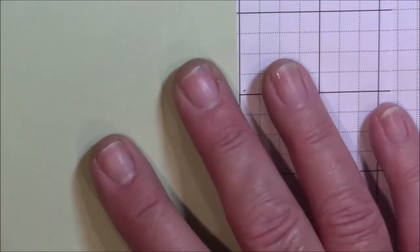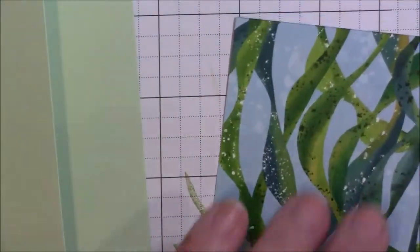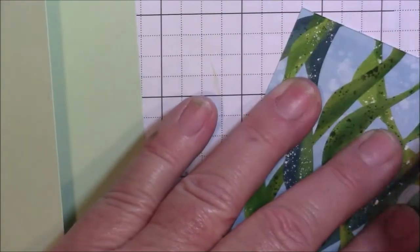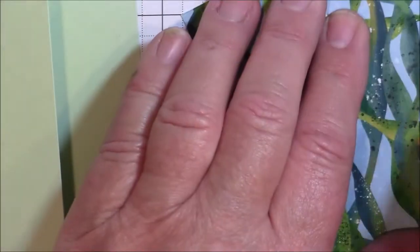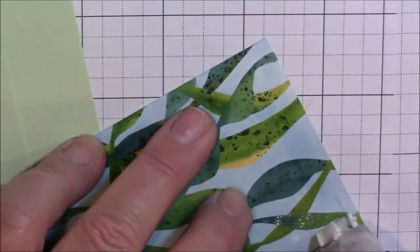Let's start with our card front. We are going to adhere our Designer Series Paper onto the front flap, just using our Stampin' Seal, going around on all four corners.